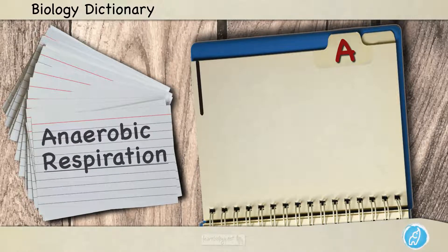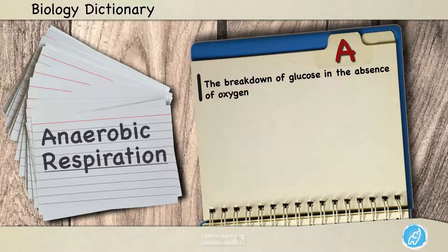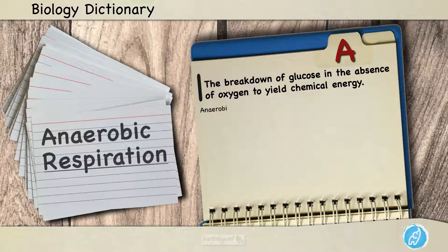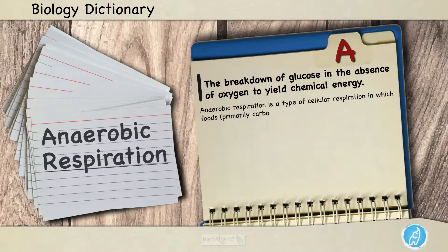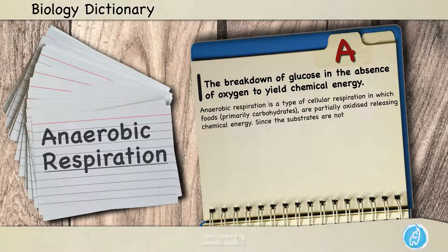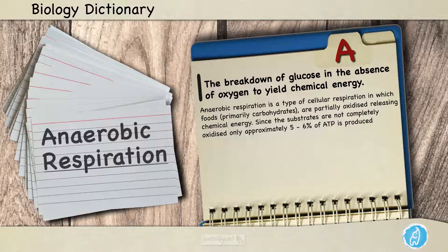Anaerobic respiration is the breakdown of glucose in the absence of oxygen to yield chemical energy. It is a type of cellular respiration in which foods, primarily carbohydrates, are partially oxidized, releasing chemical energy. Since the substrates are not completely oxidized, only approximately five to six percent of ATP is produced in comparison to aerobic respiration, which requires oxygen.